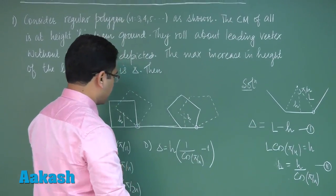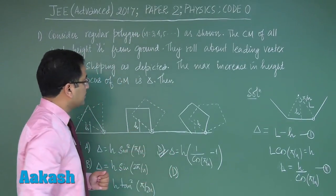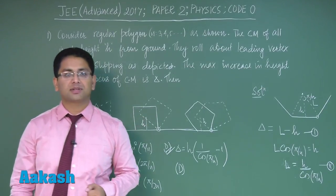Now all you have to do is put the value of l from equation 2 into equation 1. You would get the correct option as option number D. So option D would be the correct solution of the first question. Let's move to question number two.